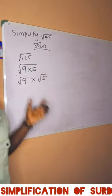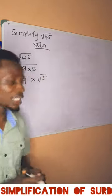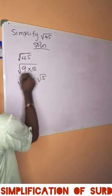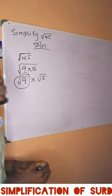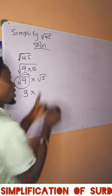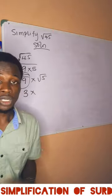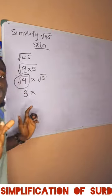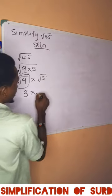This is applicable. So we can analyze this. What is the square root of 9? 3. But 5 is an imperfect square, so we cannot simplify it further. So we leave it the way it is.